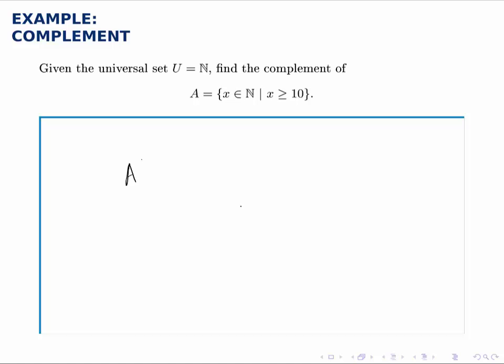A complement will be all the numbers in the universal set that are not in A. So it's all the natural numbers that are not greater than or equal to 10.